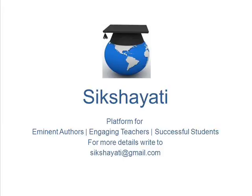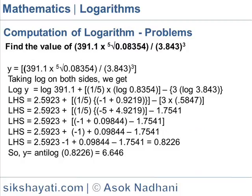Platform for Eminent Authors, Engaging Teachers, Successful Students. Find the value of 391.1 times the 5th root of 0.08354 divided by 3.843 cubed.